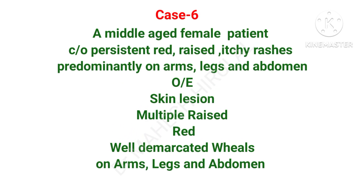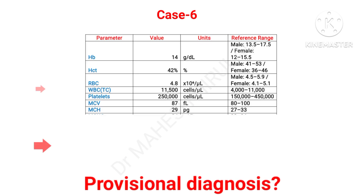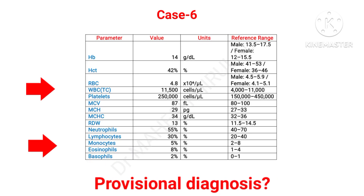A middle-aged patient complaining of persistent red, raised, and itching rashes predominantly on arms, legs, and abdomen. On skin examination the lesions were multiple, raised, and red in color; well-demarcated wheals were observed on arms, legs, and abdomen. CBC showed slightly raised WBC count and raised eosinophils. Guess the probable diagnosis.